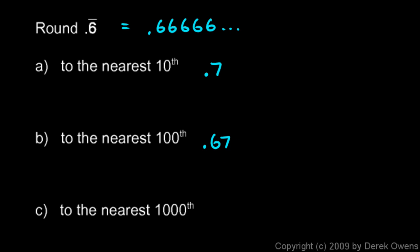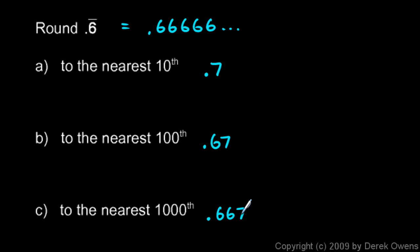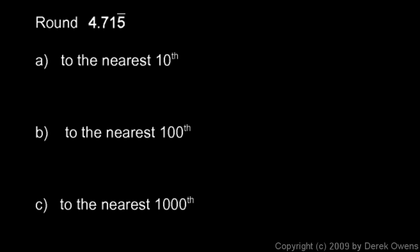Instead of 0.66 it's 0.67 — we round that one up because the one after it was 5 or above. And to the nearest thousandth, that means three places, so we look at the next digit. That digit is 5 or higher, so the one right before it gets rounded up. The answer is 0.667.